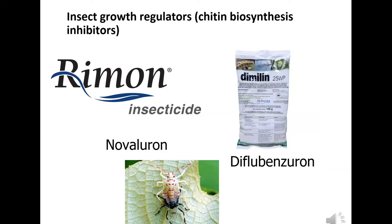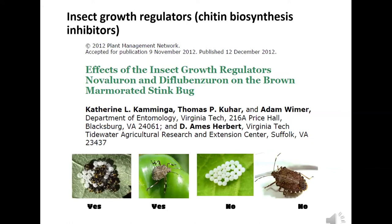One thing we looked at was insect growth regulators, found in products like Dimilin and Rimon. These insecticides affect the insect's ability to form its outer shell after molting — the insect can't complete the molt and dies. We published a paper showing these products control nymphs very well — both early and larger nymphs — but had no effect on eggs and no effect on adults. So you've got a material that won't control an adult stink bug flying in from a tree and feeding on your tomato. It's only going to give you control of nymphs developing on plants. It has potential to help, but it's not the complete answer.